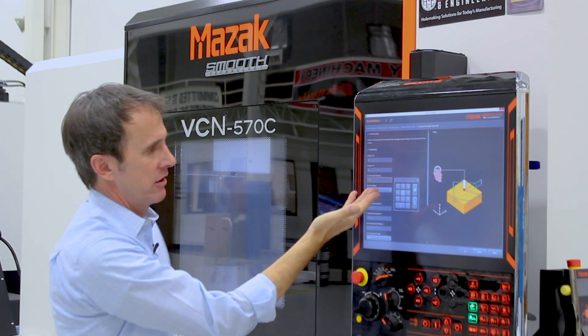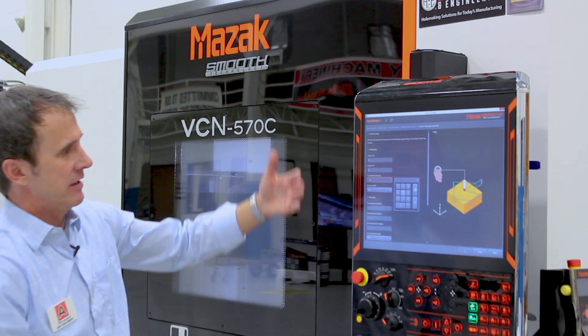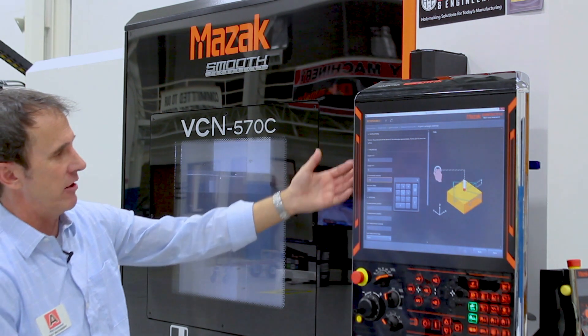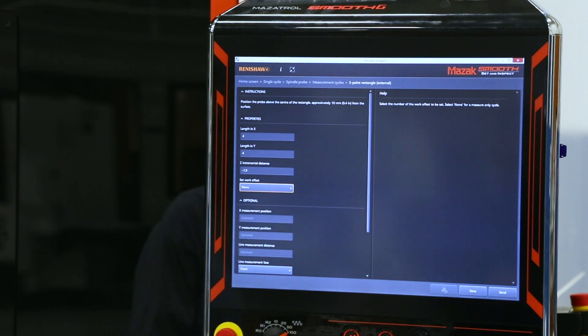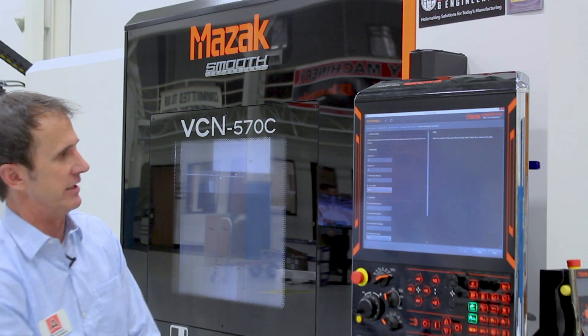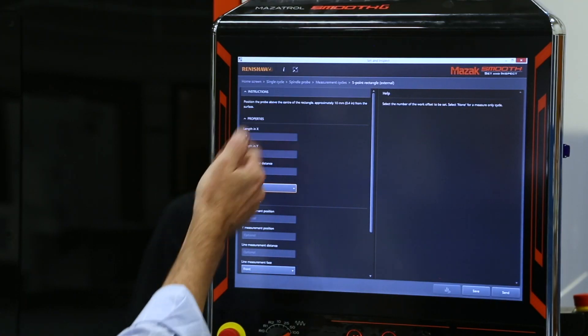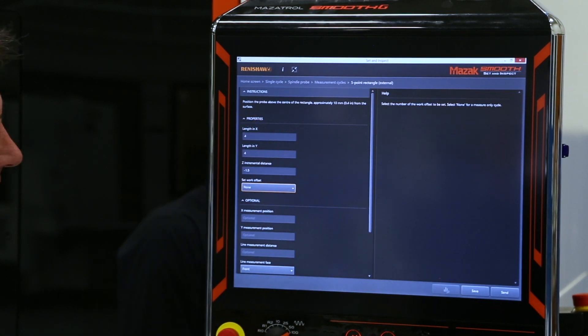At that point, the last thing I need input is, do I want to set it to a work offset or am I just using this for inspection? So for this experiment, I'm just going to pick none and I'm just going to do it as a quick little routine. So once I've finished inputting all the data it needs in the fields.